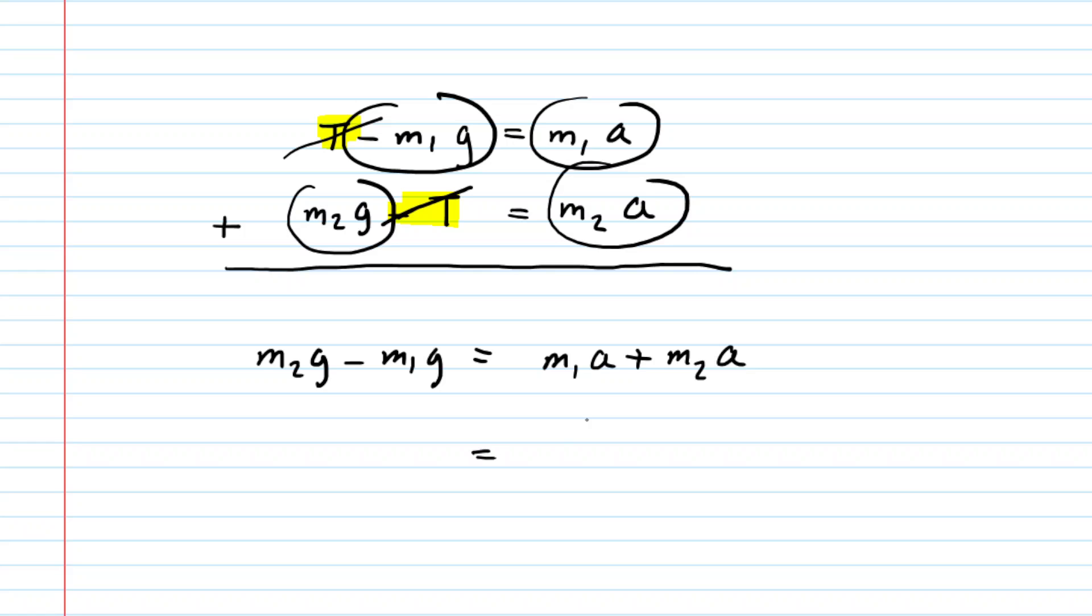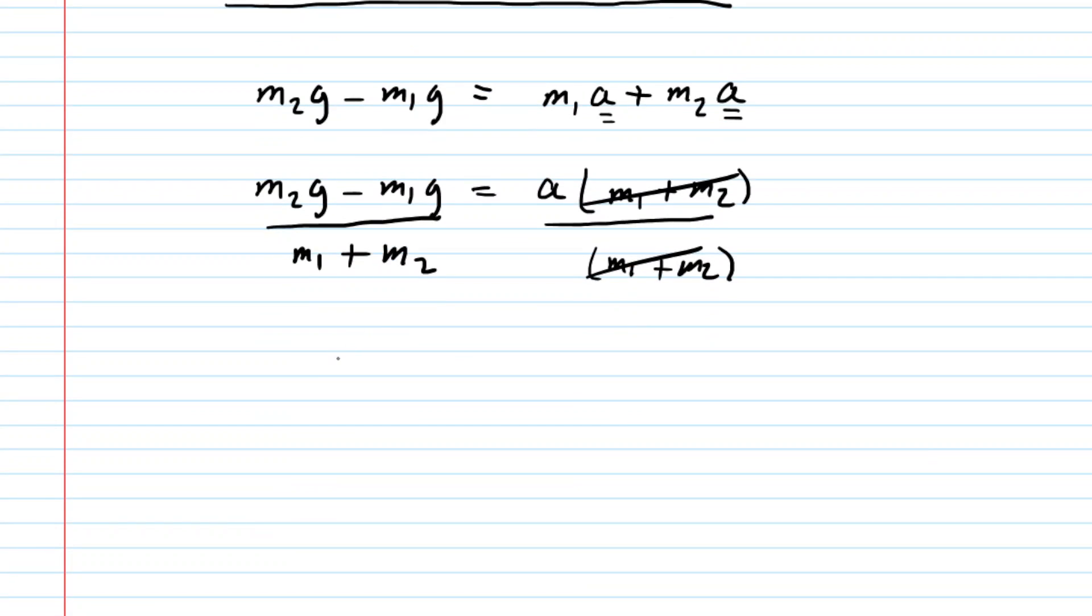Now this is neat because we are trying to find acceleration, and that appears as a greatest common factor on the right-hand side. We can actually factor out that acceleration. That would leave us with the sum of the masses. And then we can divide each side of the equation by the sum of the masses. And what's really nice there is they'll cancel out on the right-hand side. And then on the left-hand side, we have our expression for the acceleration. Let's just go ahead and tidy it up. And there it is. And you can make your life even easier by noticing that g appears as a greatest common factor in the numerator. So let's go ahead and factor that out.